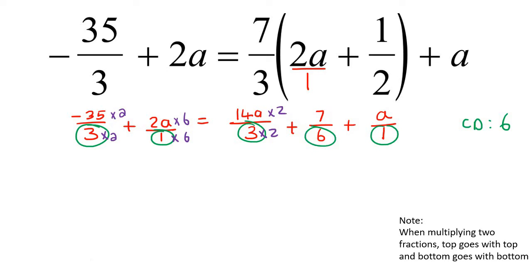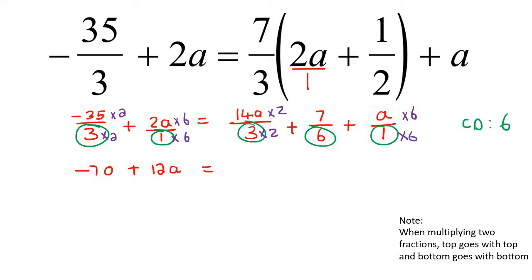We're just trying to get all of them to become a 6. This one we don't need to do anything with, and then we times this by 6 and times this by 6. So now we end up with minus 70. In the previous lesson we said that when the denominators are all the same and you're busy with an equation, you don't need to keep writing the denominator. This is going to give us 12a, 14 times 2 is 28a, plus 7, plus 6a.